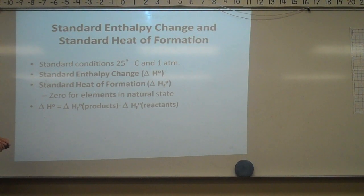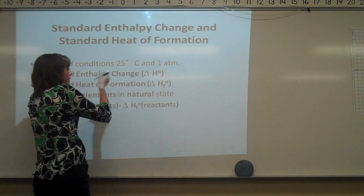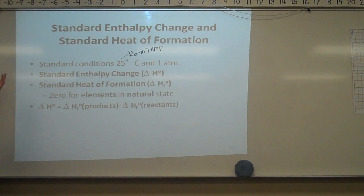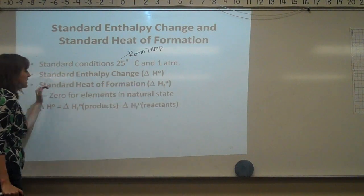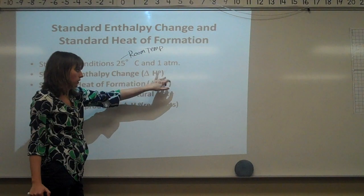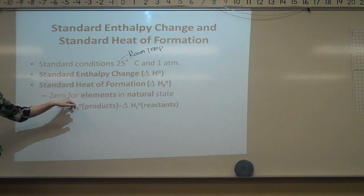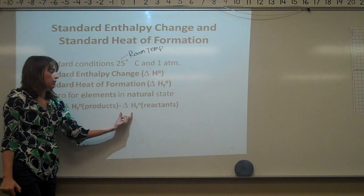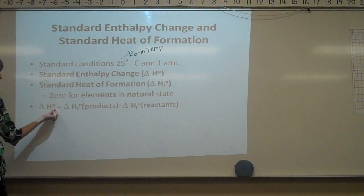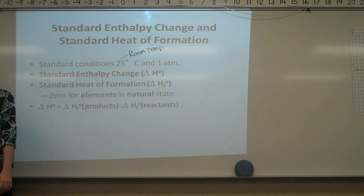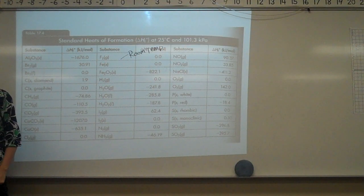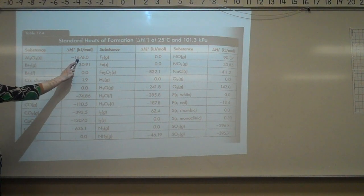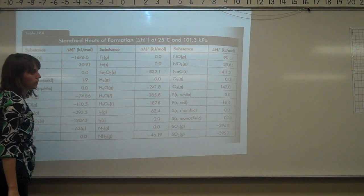Standard enthalpy change and standard heat of formation: standard conditions are 25 degrees Celsius and one atmosphere. The standard enthalpy change is delta H, and the standard heat of formation is delta HF with a degree symbol. Elements in their natural state have an enthalpy of zero. Delta H equals the delta H of formation of the products minus the delta H of formation of the reactants. The heat of formations chart — your delta HF — is the most important chart we'll be using.